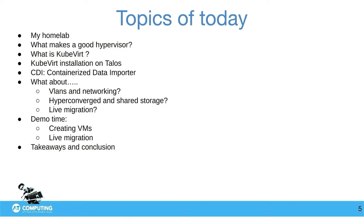The topics of today: first I'm going to talk about my home lab, then what makes a good hypervisor — that's my personal opinion. Going to talk about what KubeVirt is, a little about the architecture, the KubeVirt installation on Talos, the CDI containerized data importer, freelancer networking, hyper-converged storage, shared storage, live migration. I'm going to do two demos, but I pre-recorded those because of the demo gods. And after that, my takeaways and conclusions on KubeVirt and Talos.